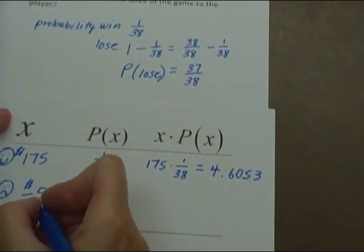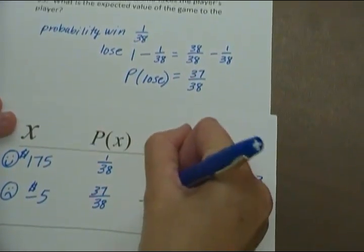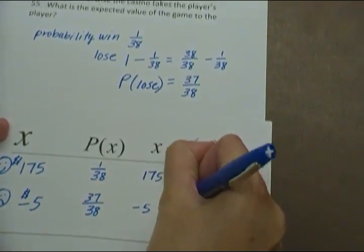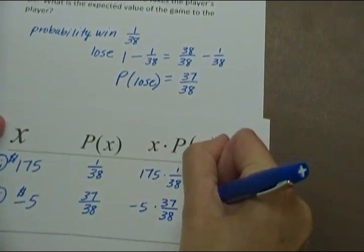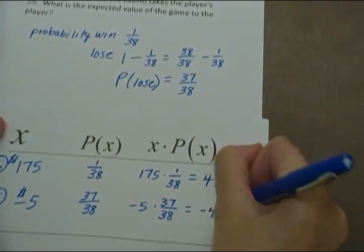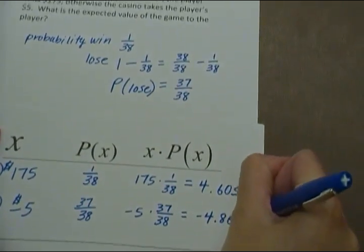A loss, you take negative 5 times 37 over 38, which equals negative 4.8684.